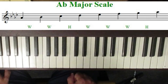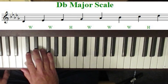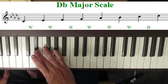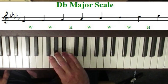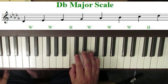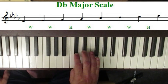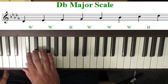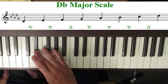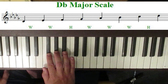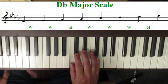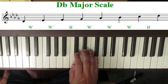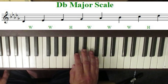Now let's take a look at the D flat major scale. Starting on D flat: whole step up to E flat, whole step up to F, half-step to G flat, whole step to A flat, whole step to B flat, whole step to C, and a half-step back to D flat. So the key of D flat has five flats, and those flats are B flat, E flat, A flat, D flat, and G flat.